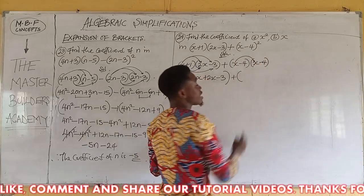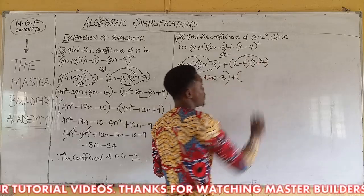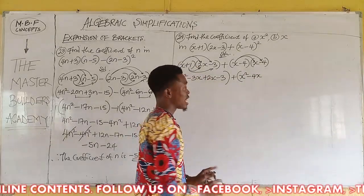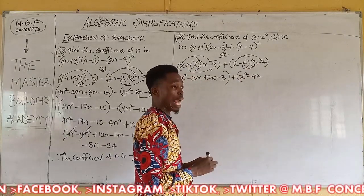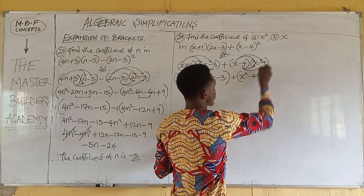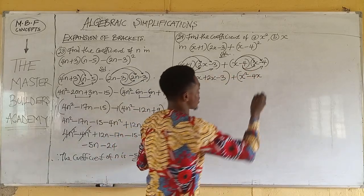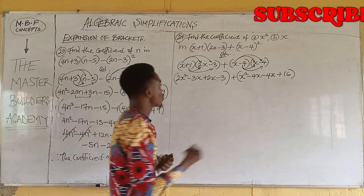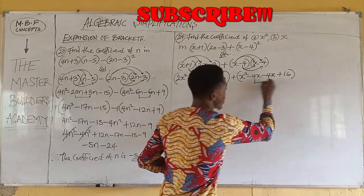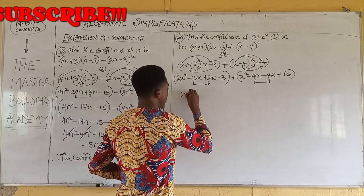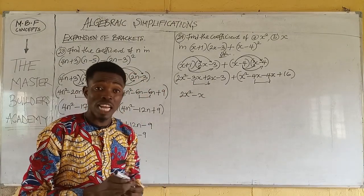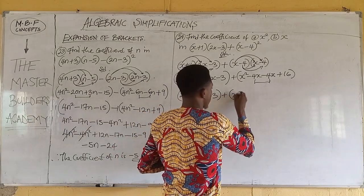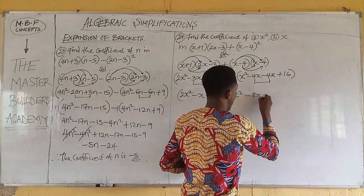The second term in the first bracket, plus 1, also multiplies both terms in the second bracket. So plus 1 times 2x gives plus 2x, and plus 1 times minus 3 gives minus 3. We put this in a bracket, then plus, open bracket for the second expansion — (x minus 4)(x minus 4). x times x gives x squared. x times minus 4 gives minus 4x. Minus 4 times x gives minus 4x. And minus 4 times minus 4 gives plus 16.